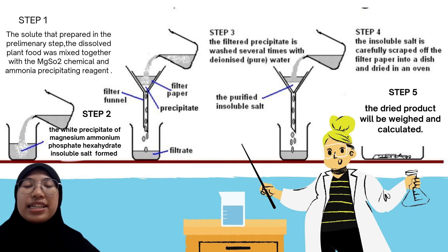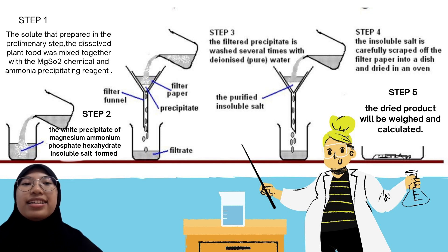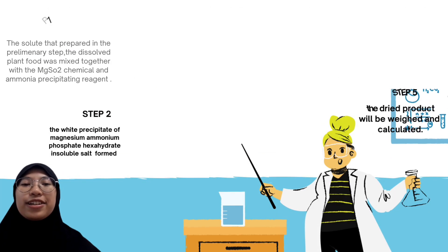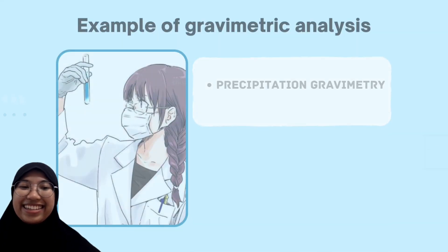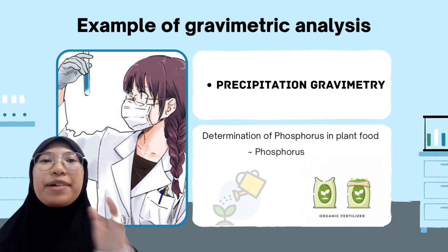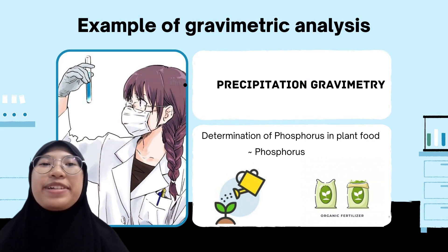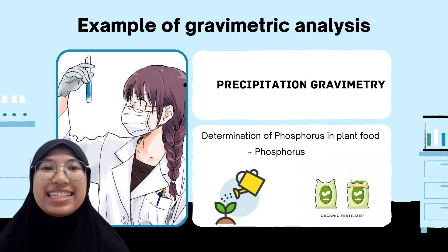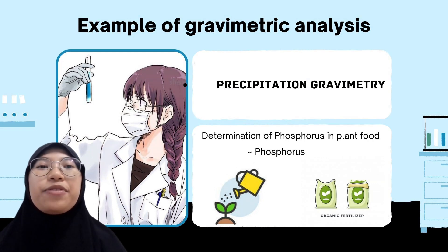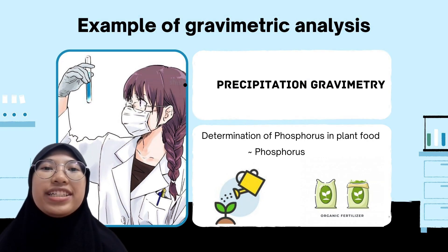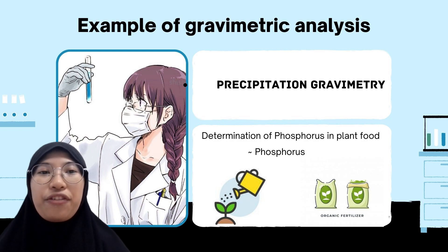The filtered precipitate was washed several times with deionized pure water. The insoluble salt was then carefully scraped off from the filter paper into a dish and dried. At the end, the dried product was weighed and calculated.